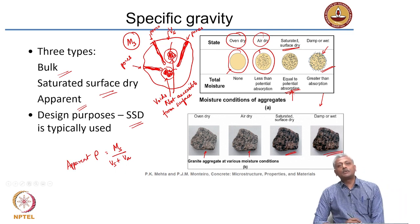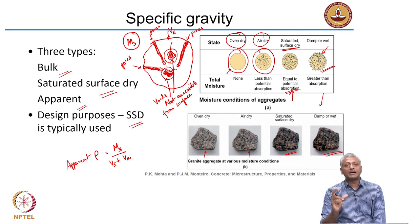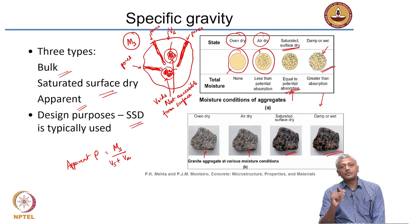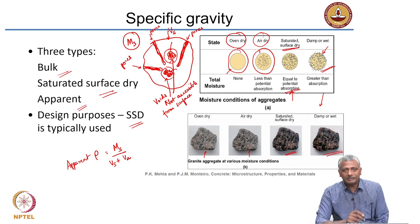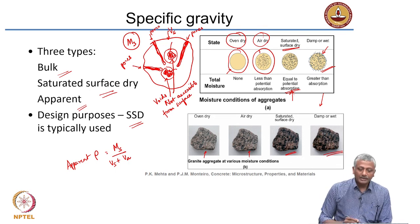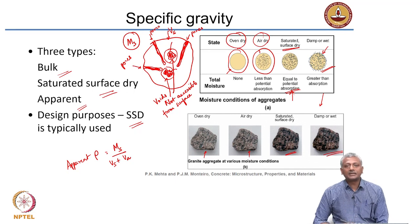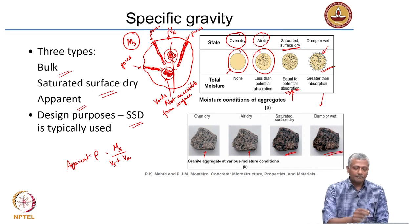The apparent density equals the dry mass of the aggregate divided by the sum of the volume of the solid and the volume of the inaccessible pores (Vs + Va). If you look at IS 2386, it will tell you how it is actually determined. When you do the experiment in your lab, you will know exactly how it is done. Apparent specific gravity is defined this way.